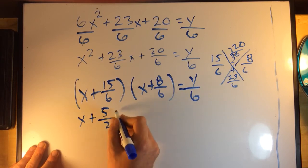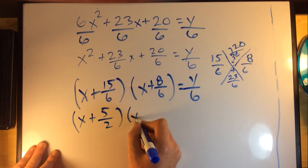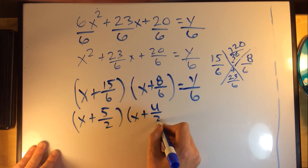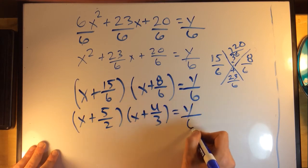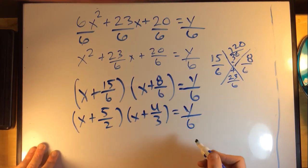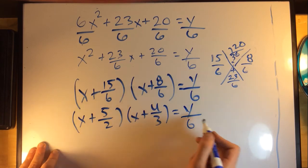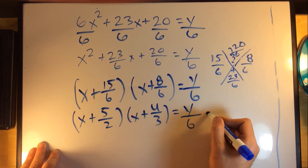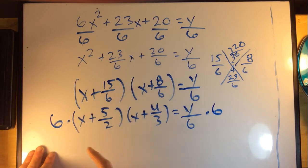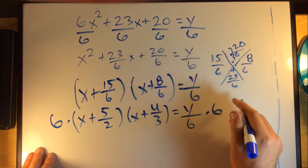Now I want to get rid of this 6 on my y, so I'll just multiply both sides by 6. Multiply both sides by 6, and I'll just cancel these guys out.